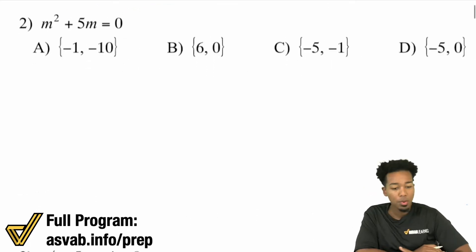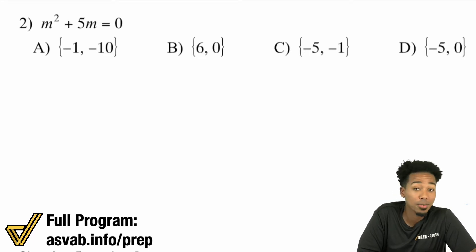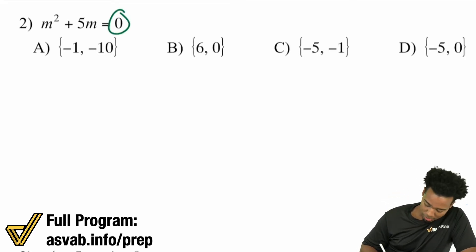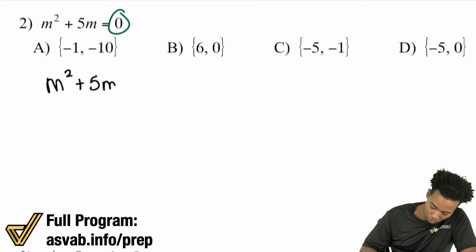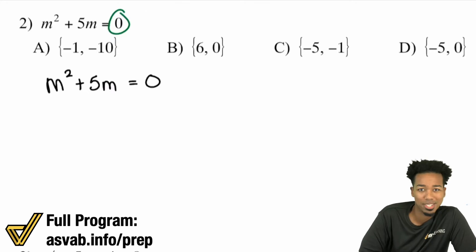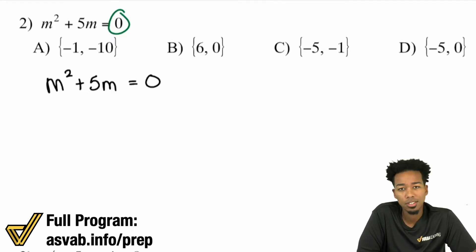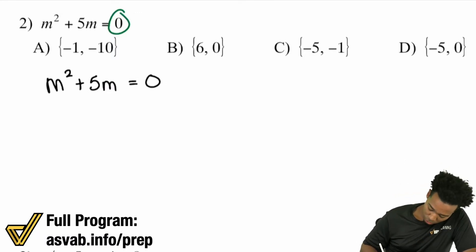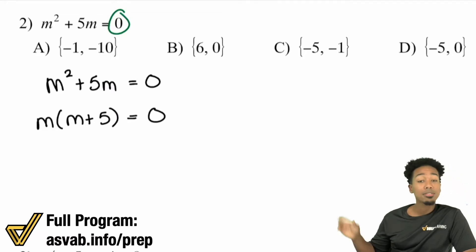Now look at this one: m squared plus 5m equals 0. This is another important case because here you're not going to use that traditional trinomial factoring method — you can actually use the greatest common factor. We already have that zero on the right side, so we're good to go. Notice we don't have a C term. So what we do is factor out the greatest common factor. m squared and 5m both share m, so we factor out m to get m times (m + 5) equals 0.